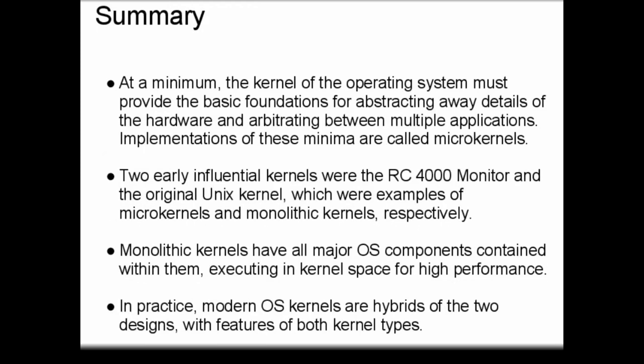In summary, the kernel is the minimum layer of software inside the operating system that provides the basic foundations for abstracting away details of the hardware and arbitrating between multiple applications. When the absolute bare minimum implementations are used, we call the result a microkernel. Monolithic kernels, on the other hand, have all their major OS components contained within them, running everything inside kernel space to improve performance. Two early influential kernels were the RC-4000 monitor — an example of a microkernel — and the original Unix kernel — an example of a monolithic kernel. In practice, most modern operating system kernels are hybrids of the two designs, with features of both types.